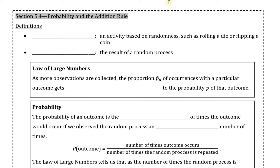There are a few definitions in this section that we would like to be comfortable with. The first is the definition of a random process. This could be any activity that's based on randomness, such as rolling a die or flipping a coin. The individual results in your random process are referred to as the outcomes.